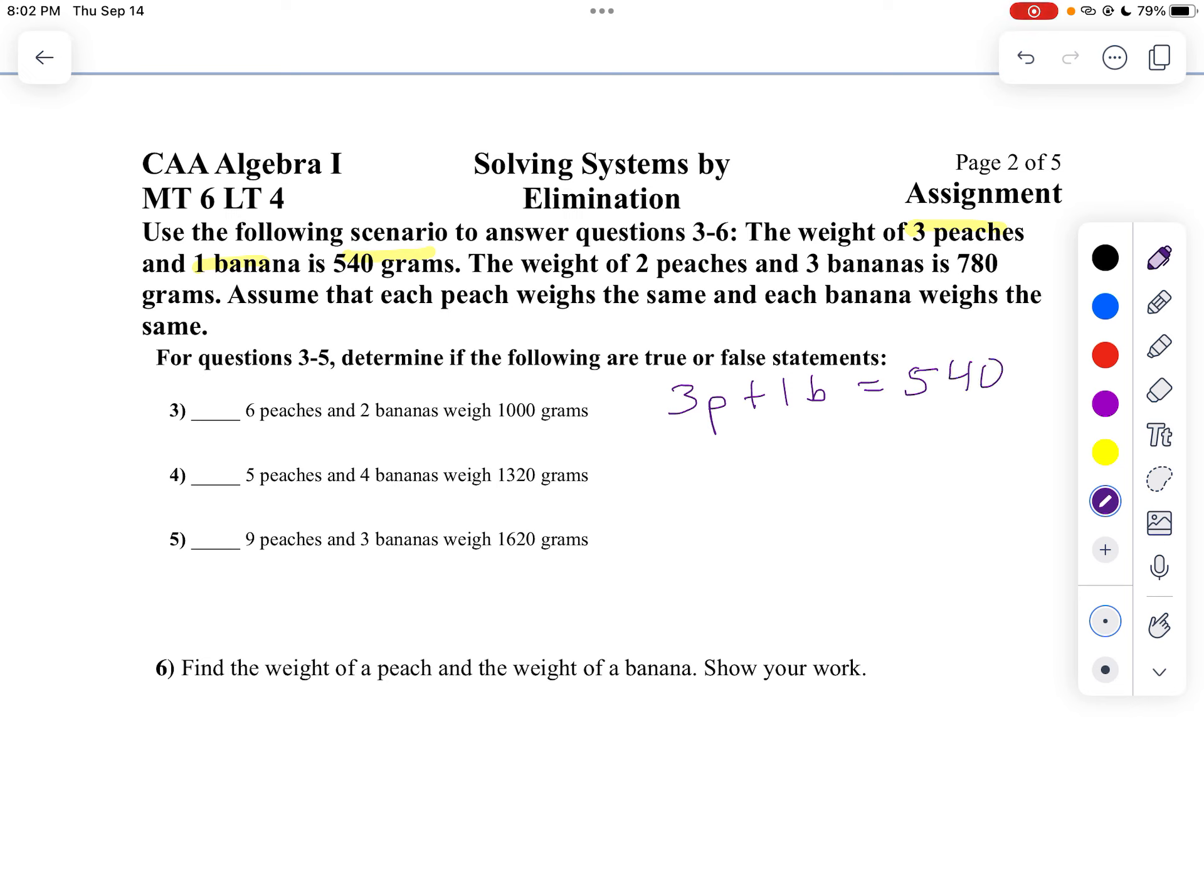And then the first question, it's a true or false one. And notice what happens. We have double the number of peaches, double the number of bananas. Is 540 double? Is that 1,000? No, that one's wrong. So that's false.